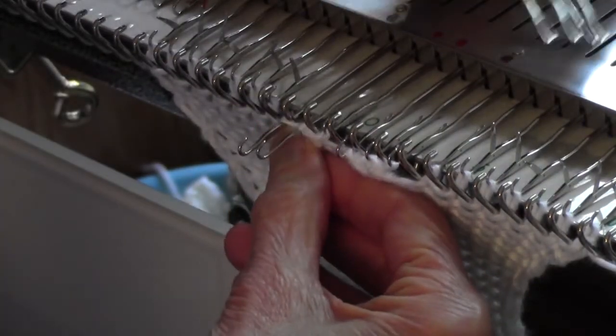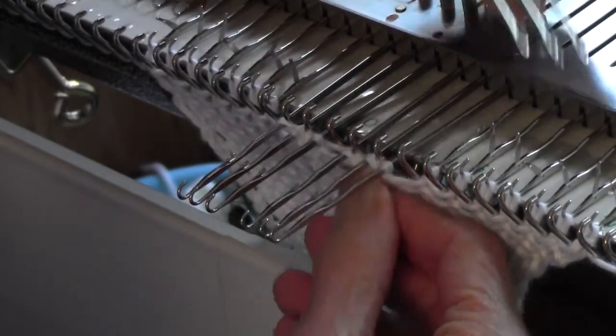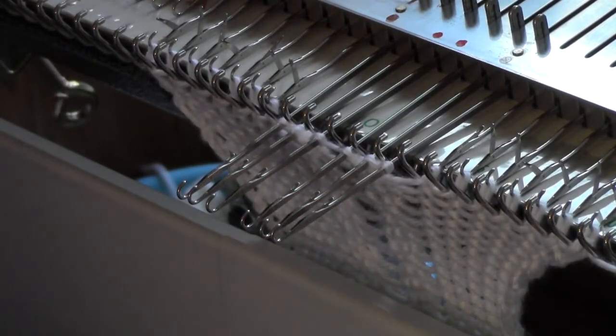Put every one of these six needles out to hold. It'll help your machine be able to knit them even though they're tight.